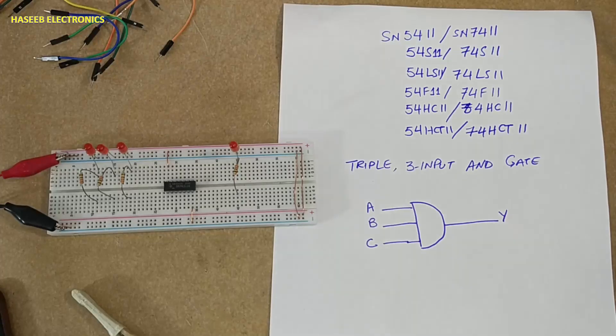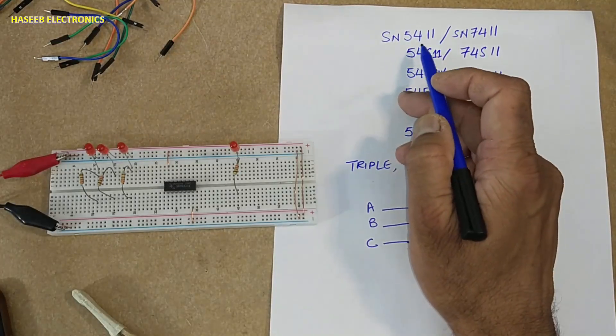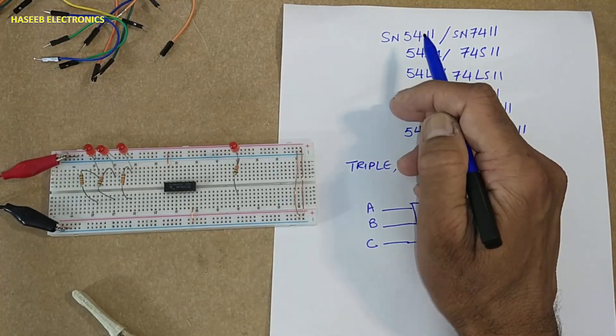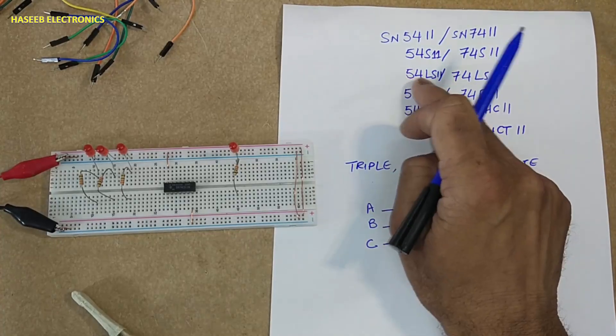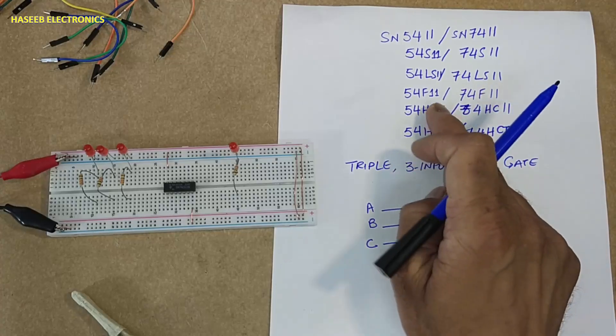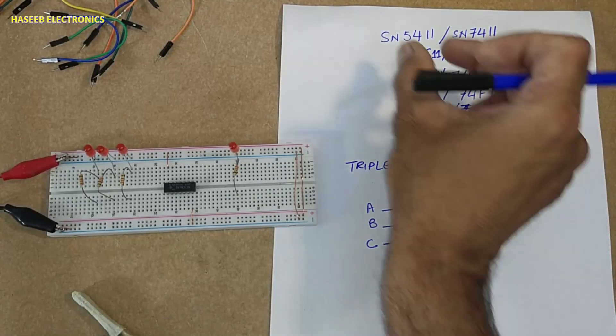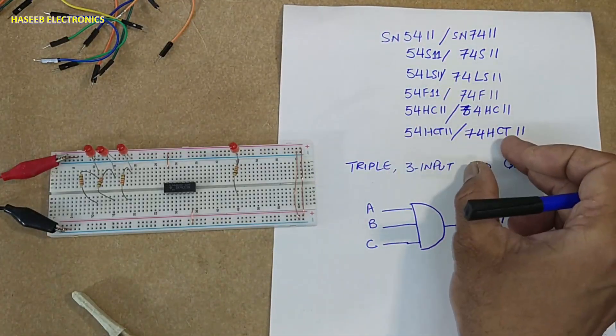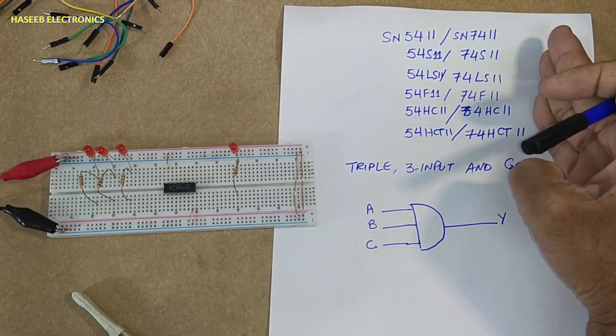Assalamualaikum warahmatullahi wabarakatuh friends, welcome back to my channel. Today we are discussing 5411 or 7411. It may be SN5411, LS11, F, HC, HCT, either in 54 serial or 74 serial. 74 is commercial, 0 to 70 degree centigrade.